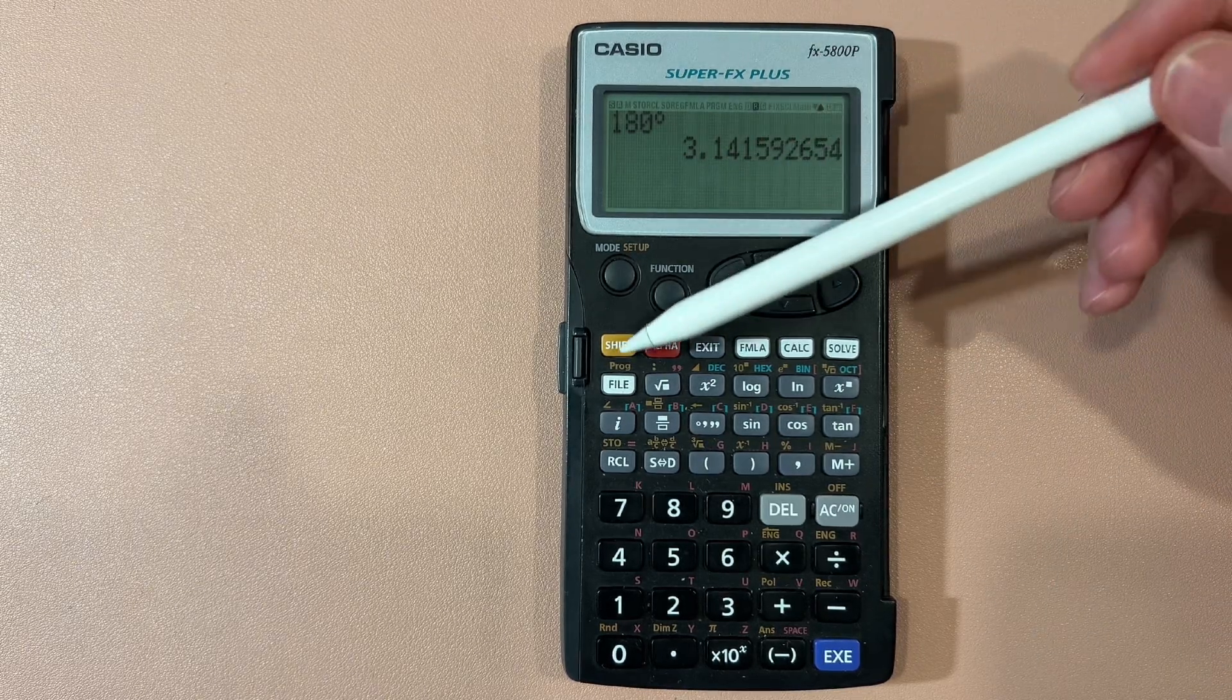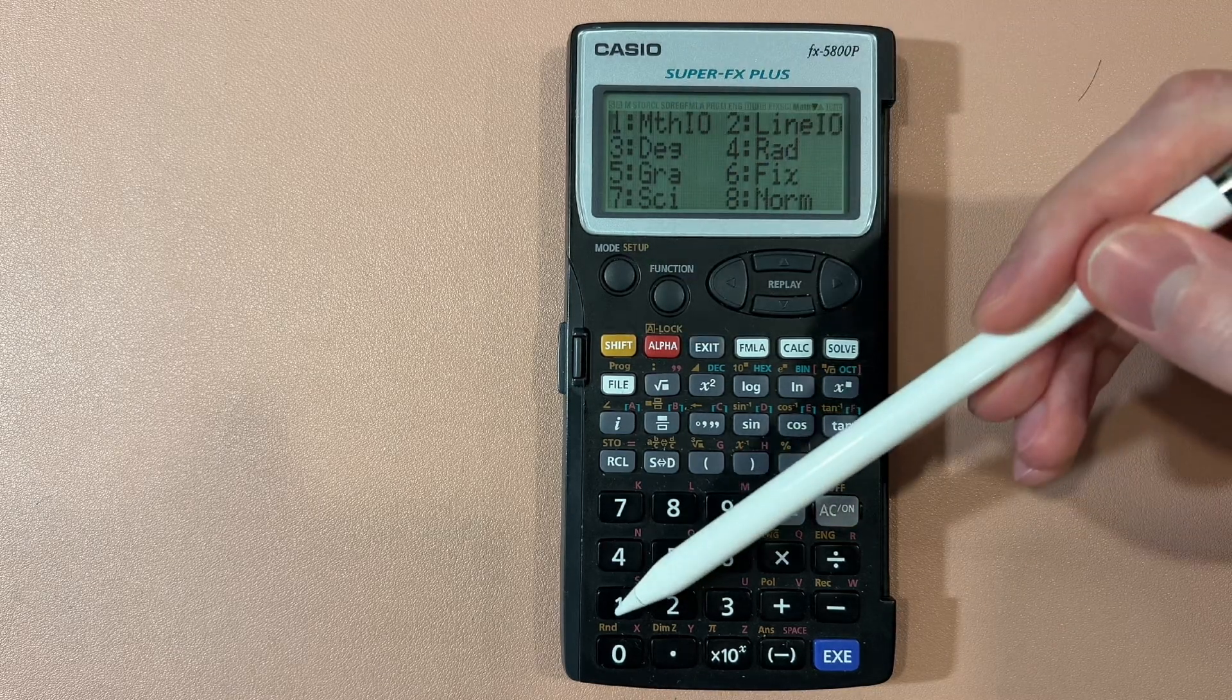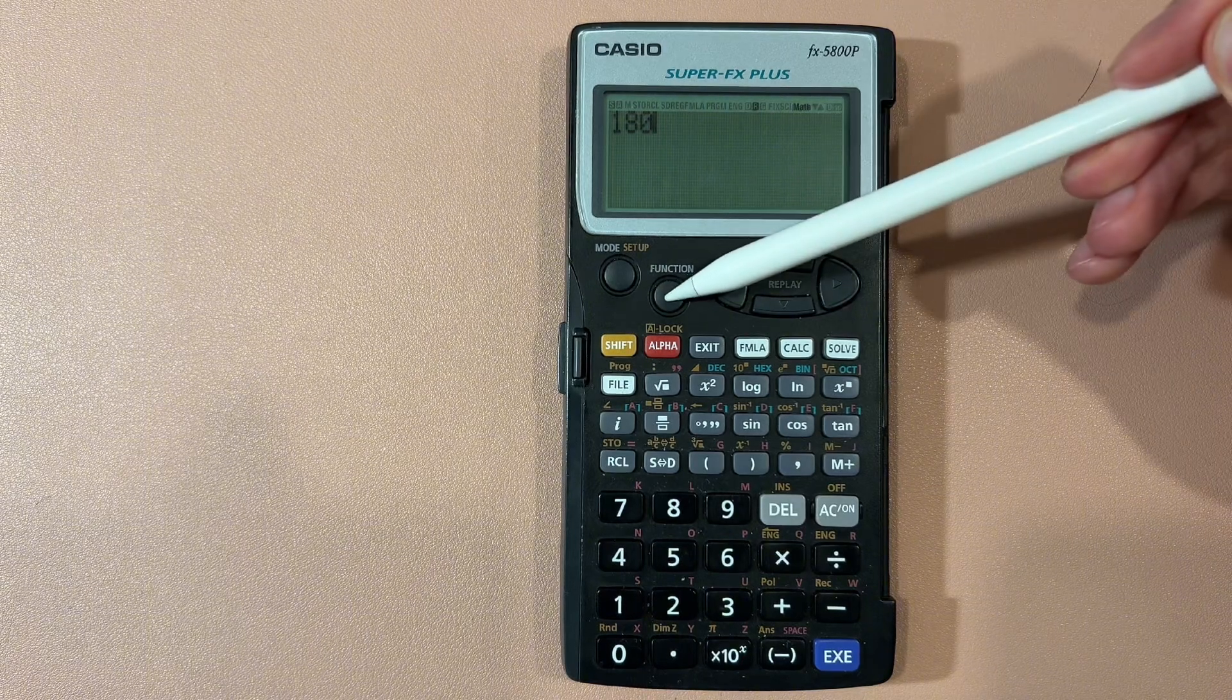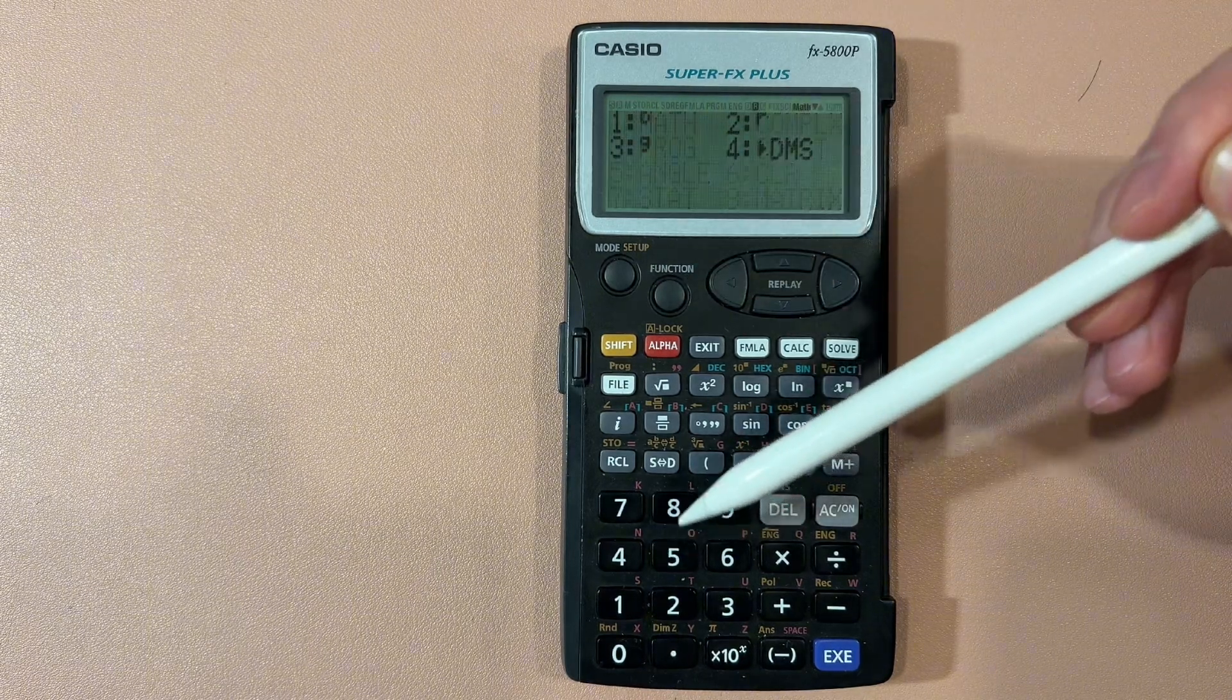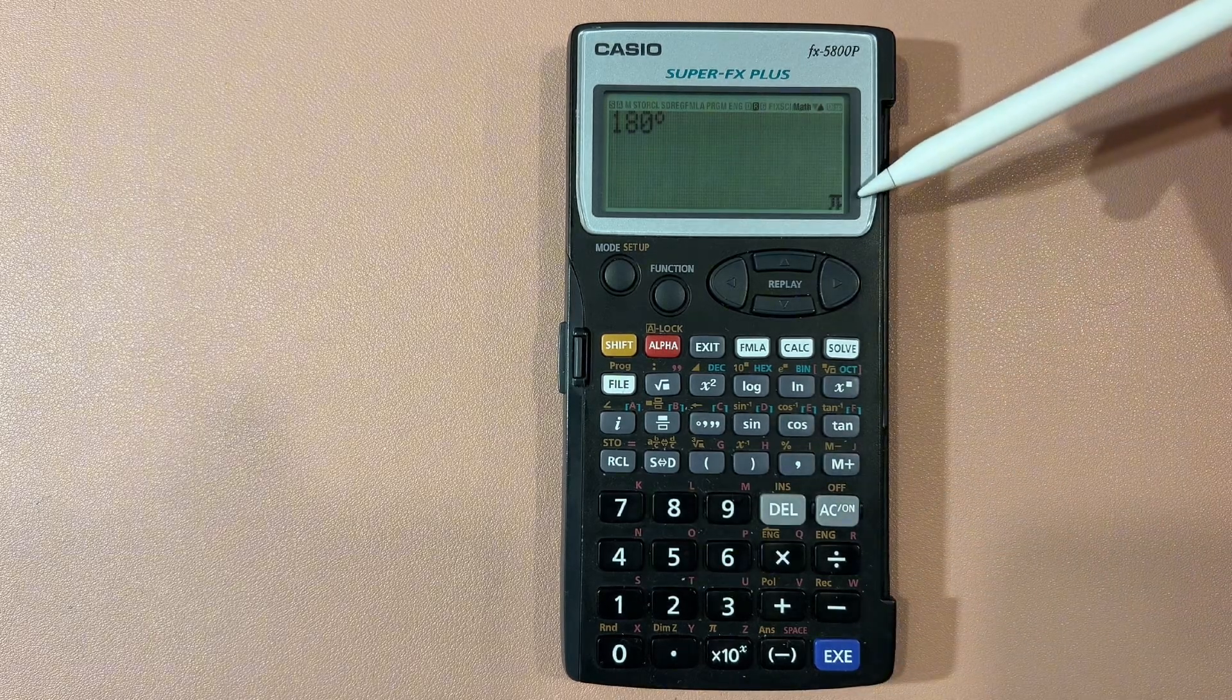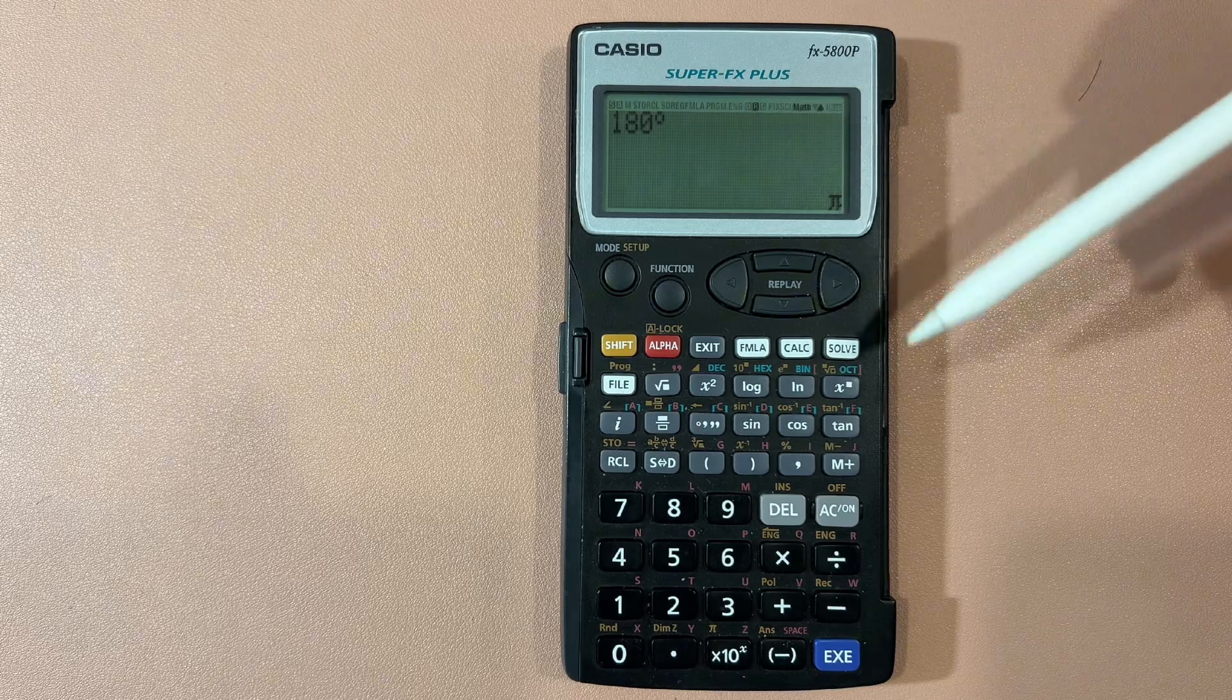We can also change the output in different formats. If we press shift mode and press number one, and for our 180 degrees that we put, again, function five angle number one, it's going to show us in pi as opposed to 3.14. That's another way of showing the output.